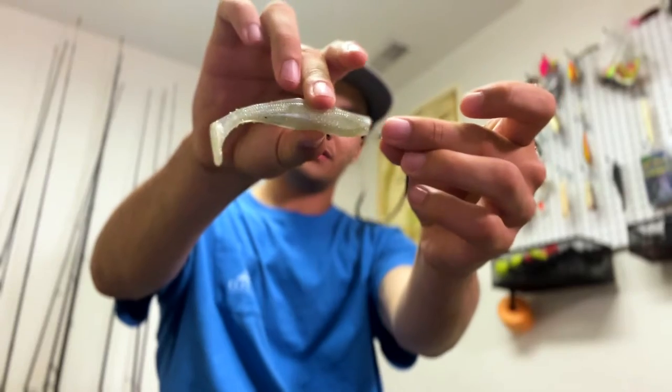Now this is something that is kind of a love-hate thing with Z-Man because Z-Mans are great and they last forever, but getting them onto a screw lock, jig head, or a swim bait hook is not super easy.